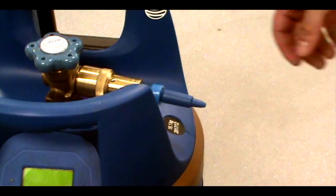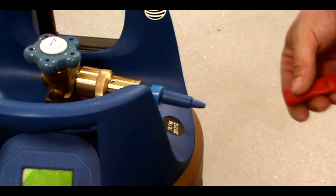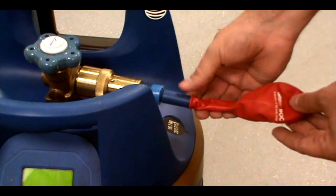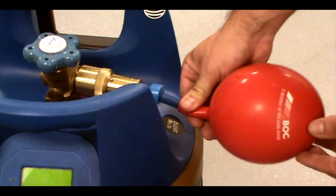Once you've attached the kit, to fill a Latex Balloon, first open the hand wheel valve anti-clockwise. Place the balloon neck over the outlet and tilt the nozzle to release the helium. Be careful not to over-inflate the balloon.